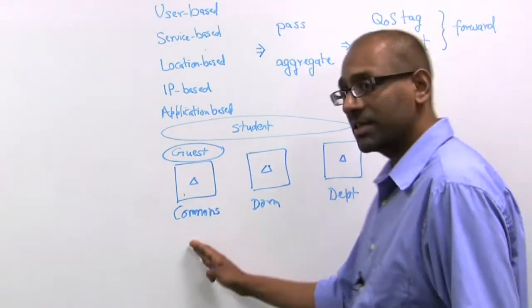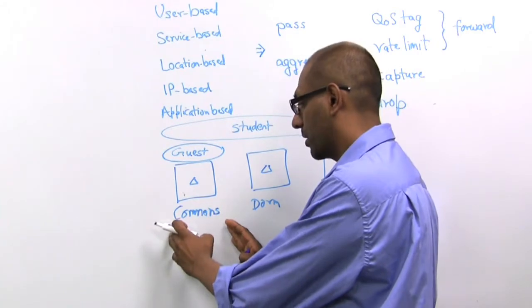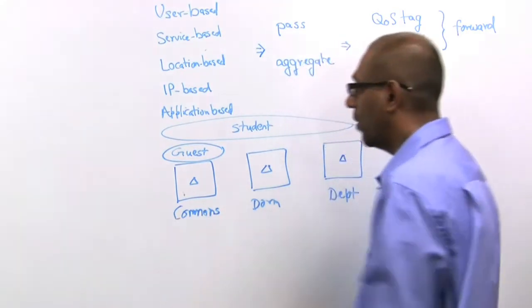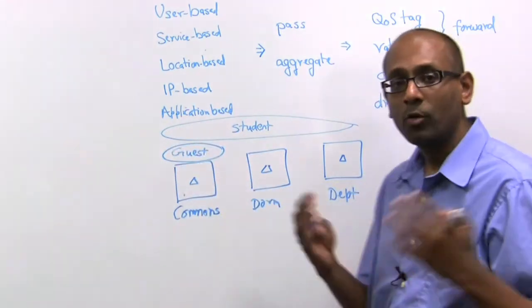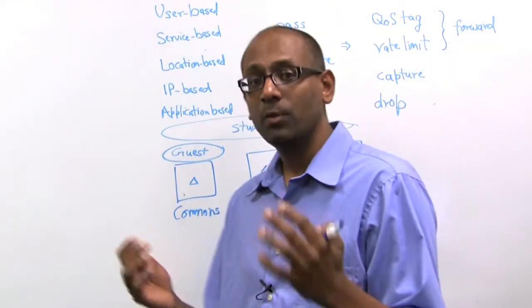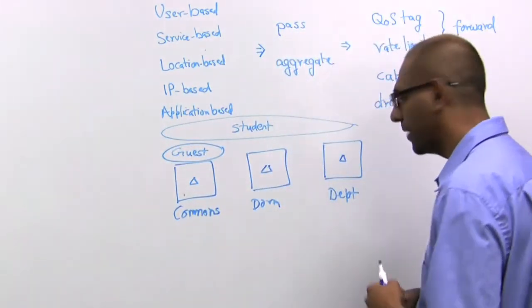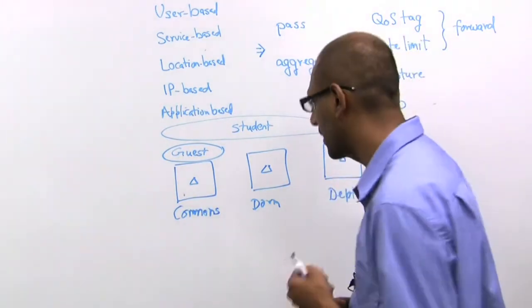So a guest can only access the wireless network while they're in the commons area, while a student can access the network anywhere in the entire campus and roam around while still being in the wireless LAN, and retain their IP addresses and their properties.